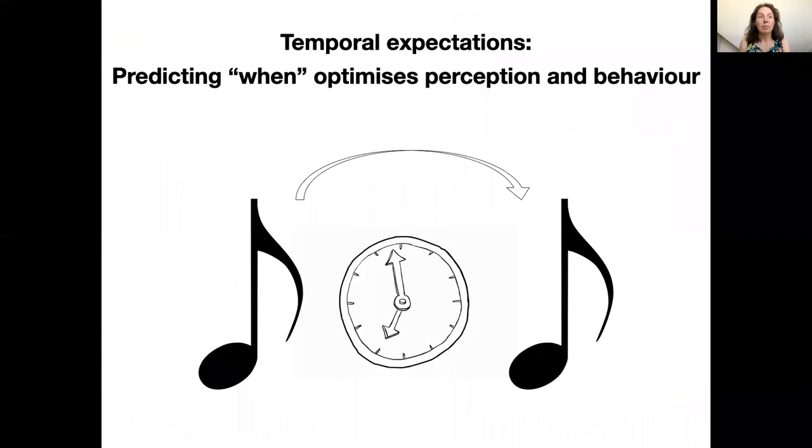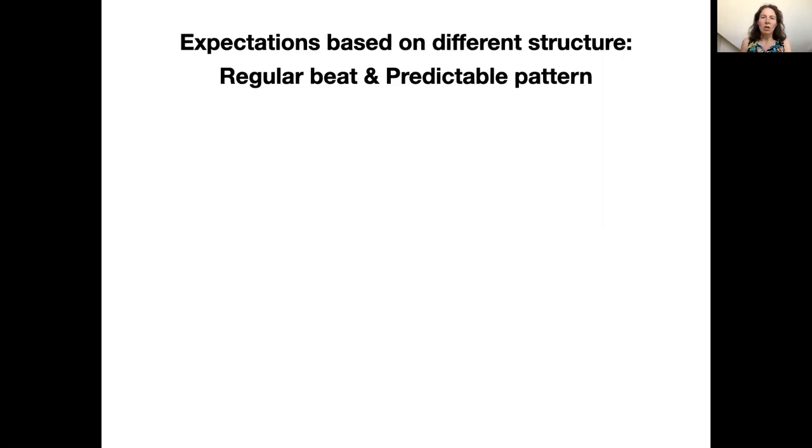In this study, we looked at temporal expectations in rhythm. To efficiently process sensory information, the brain continuously tries to predict the timing of incoming events, and these temporal expectations optimize perception and behavior. One domain in which temporal expectations are ubiquitous is musical rhythm, where predictions about when a sound will occur allow us to synchronize to music together. Rhythms often contain regular periodic beats as well as predictable patterns of tones, and these two possible sources of temporal expectations are the focus of the work I present here.